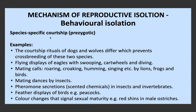Some examples of species-specific courtship include courtship rituals of dogs and wolves, which differ to prevent interbreeding; flying displays of eagles that differ between species; mating calls of animals; mating dances by insects; the secretion of pheromones, which is quite important in insects and invertebrates — insects of different species cannot recognize the pheromone secretion of another species; and feather displays and colour changes in birds that signal sexual maturity.